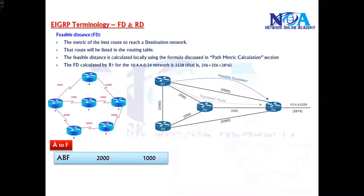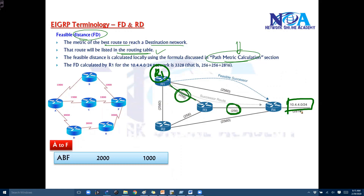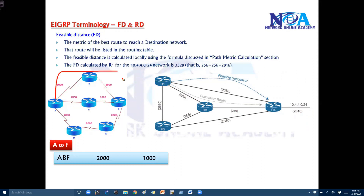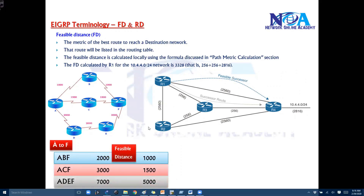Generally there are conditions. The feasible distance is the metric to the best route to the destination, and it will be present in the routing table. Technically, the best route is called the successor route, and the overall cost is the feasible distance. It is calculated based on the metric calculation discussed in previous sections. In this example, from router 1 to reach this particular subnet, the overall cost will be 256 plus 256 plus 2816 — that is your successor route and your feasible distance. From the second topology, 2000 is the best, so 2000 is your feasible distance.